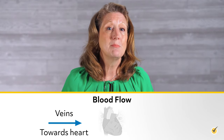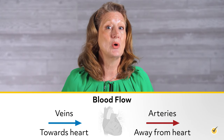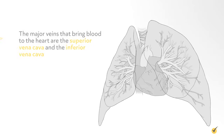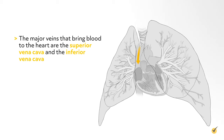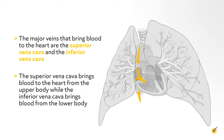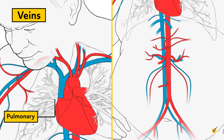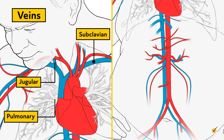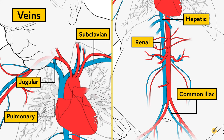Now let's talk about the blood vessels that connect everything and allow for the proper functioning of the heart. As a rule, veins bring blood towards the heart and arteries carry blood away from the heart. The major veins that bring blood to the heart are the superior vena cava and the inferior vena cava. The superior vena cava brings blood from the upper body, while the inferior vena cava brings blood from the lower body. Other veins include the right and left pulmonary veins, which bring oxygenated blood from the lungs into the heart. Other major veins include the jugular vein, left and right subclavian veins, hepatic portal, renal veins, and the common iliac veins.